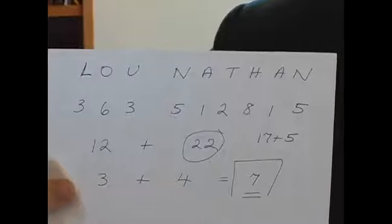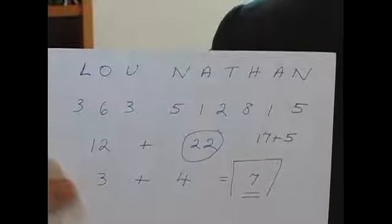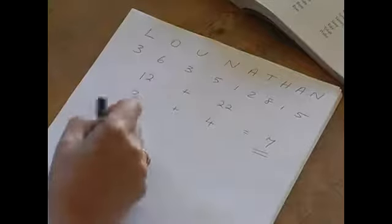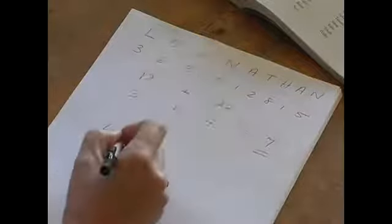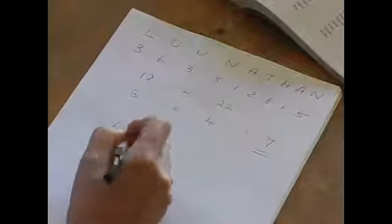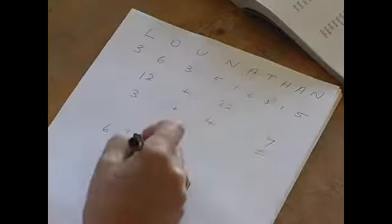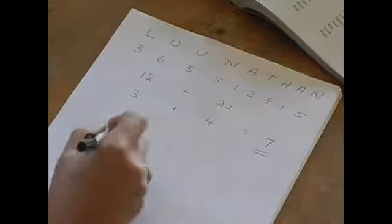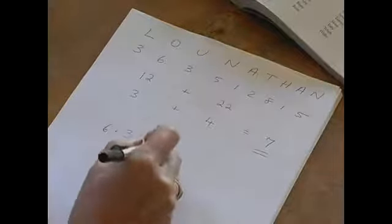So what we're going to do is use what we've already discovered about Lou's name and all the numbers contained within it, and we're going to just pull out the vowels. So the vowels we've got are O — that's 6 — U, 3, A, 1, and another A, 1. So we've got 6 plus 3 plus 1 plus 1. That's how you do it — by all the vowels.